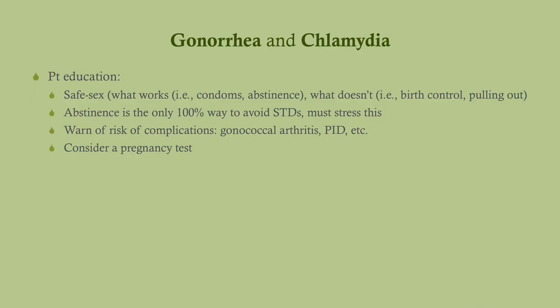Patient education is always important. On CCS, you'll say safe sex counseling. Remind patients of what works — condoms and abstinence — and what doesn't work. Birth control will help you from getting pregnant but will not help you from getting venereal disease. PrEP, used for preventing HIV-AIDS, will work for that but not for venereal disease. Pulling out is certainly not effective for preventing venereal disease. Abstinence is the only 100% way of avoiding STIs, though in practice, not quite as easy.